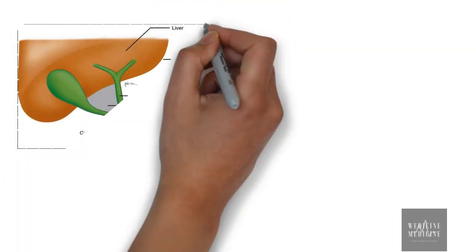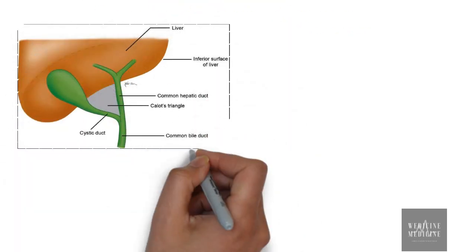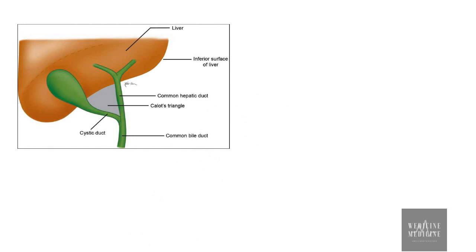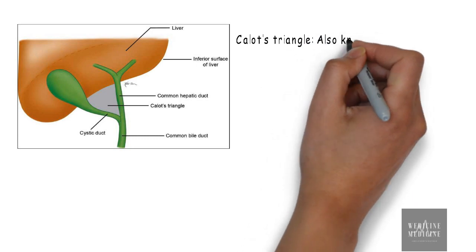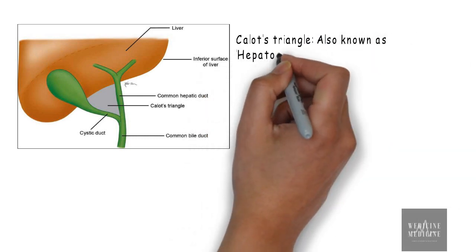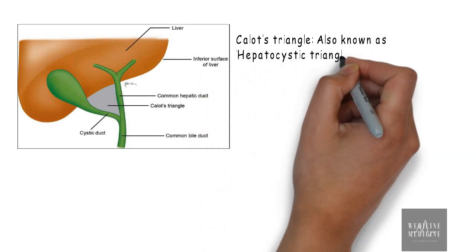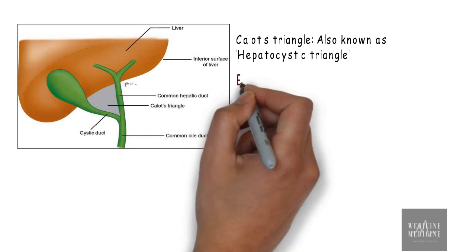Calot's triangle was first described by a French surgeon named Jean-Francois Calot in 1891. This triangle is also known as hepatocystic triangle and is a small anatomical space in the abdomen.